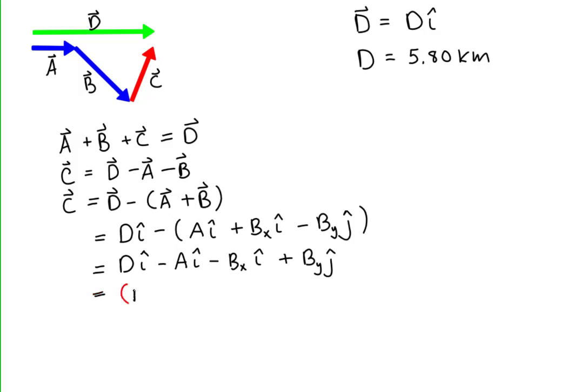Grouping the x components together, we have d minus a minus b sub x i-hat plus b sub y j-hat. Let's substitute our trigonometric functions for the components of vector b.